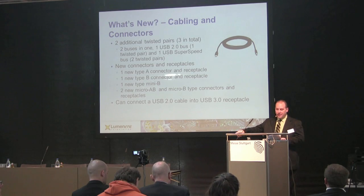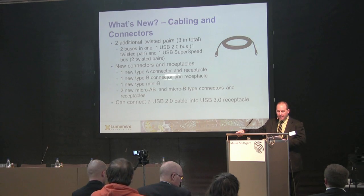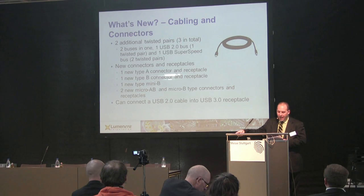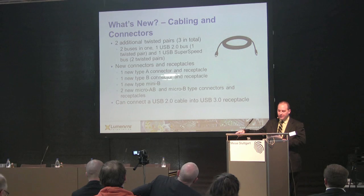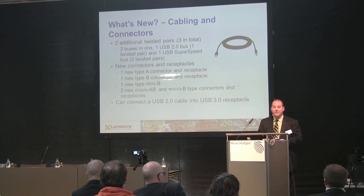One of the more visible changes with the introduction of the new standard is the cabling and connectors. In order to reach the new transfer speeds it was necessary to introduce new cabling and connectors that can handle the higher data rates. On the cable side, two new twisted copper lines have been added to the standard USB 2.0 cabling. These lines provide the bandwidth required to reach five gigabits per second while still providing bandwidth for older USB 2.0 devices.